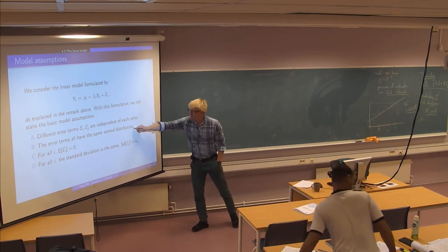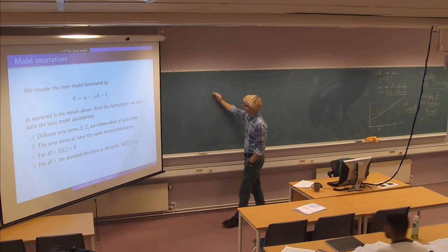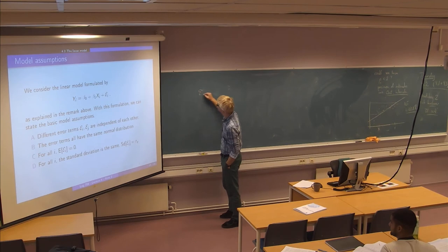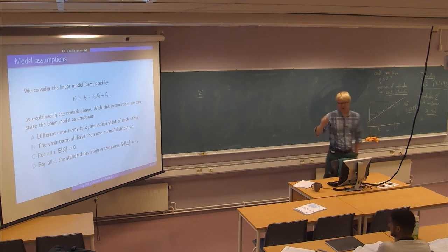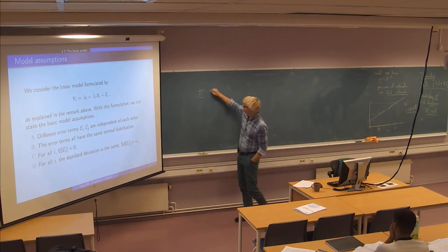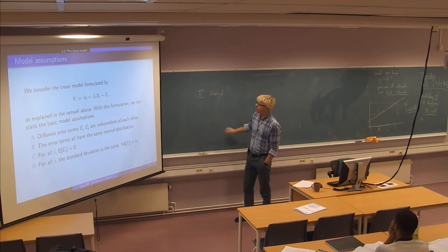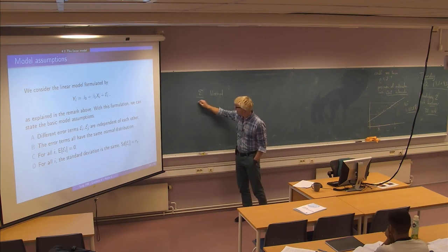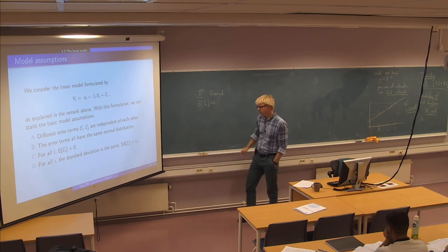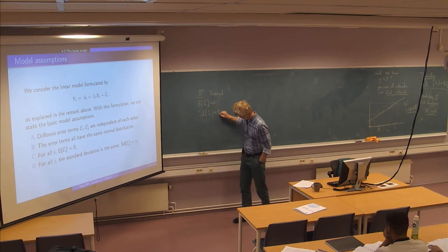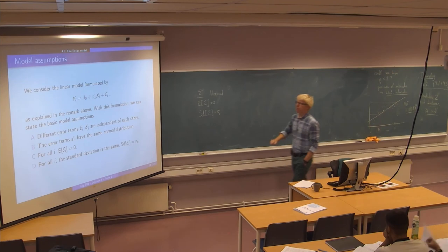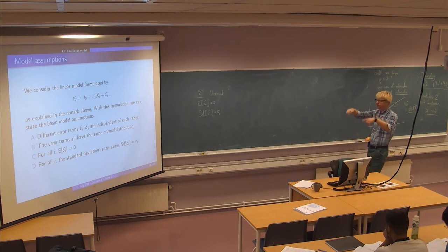This one is easier to understand and it's actually a limitation of regression analysis. It says that we are modeling the error term as a random variable, and we are going to have to assume that it's normal. Moreover, we are assuming that the expected value is zero, and finally, the standard deviation is some number that is the same for all pairs of observations in the data set.